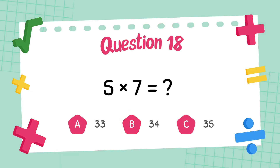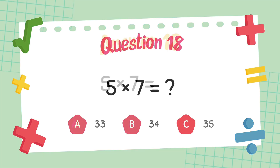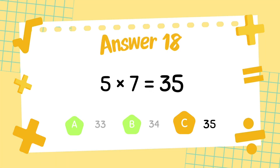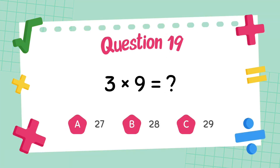What is 5 multiply 7? The answer is 35. What is 3 multiply 9?